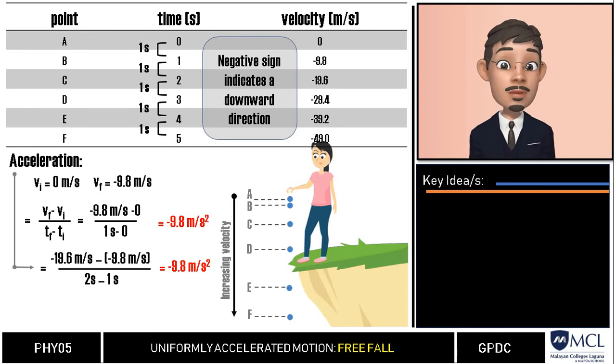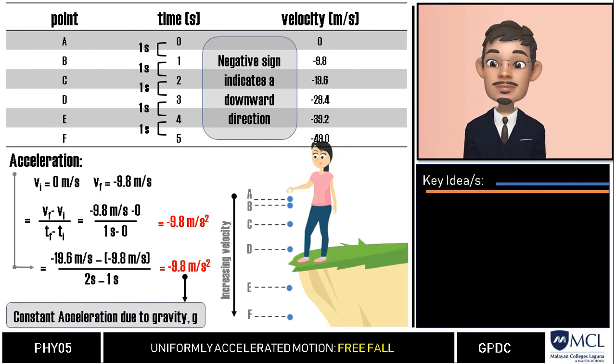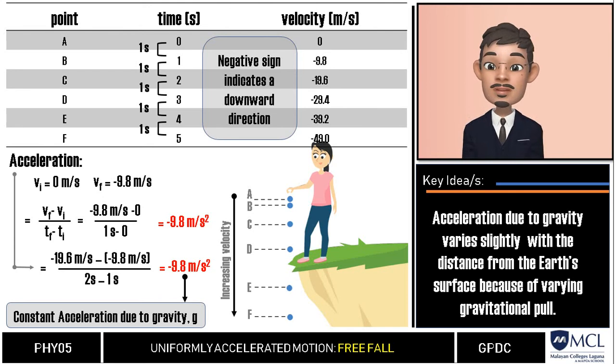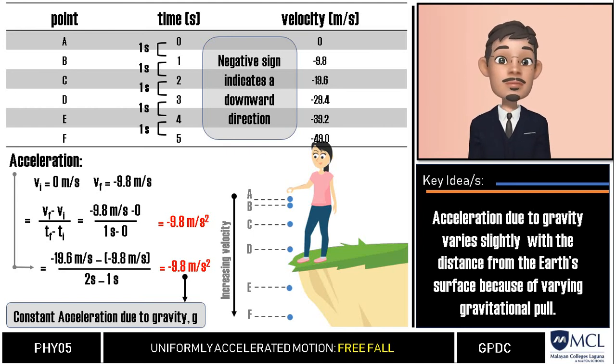This constant acceleration of a freely falling body is called the acceleration due to gravity or the free fall acceleration, which we will use a small letter g as symbol. Remember that this is true only if the object is found near the earth's surface. The value also varies slightly with distance from the earth's surface because the earth's gravitational pull also varies, but that is too small to consider in computations unless the object is found beyond the earth.